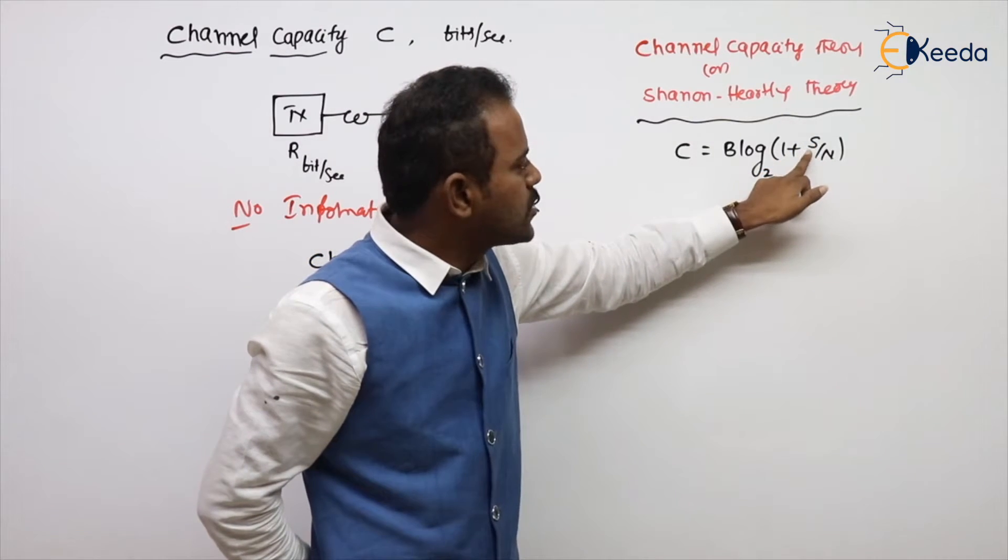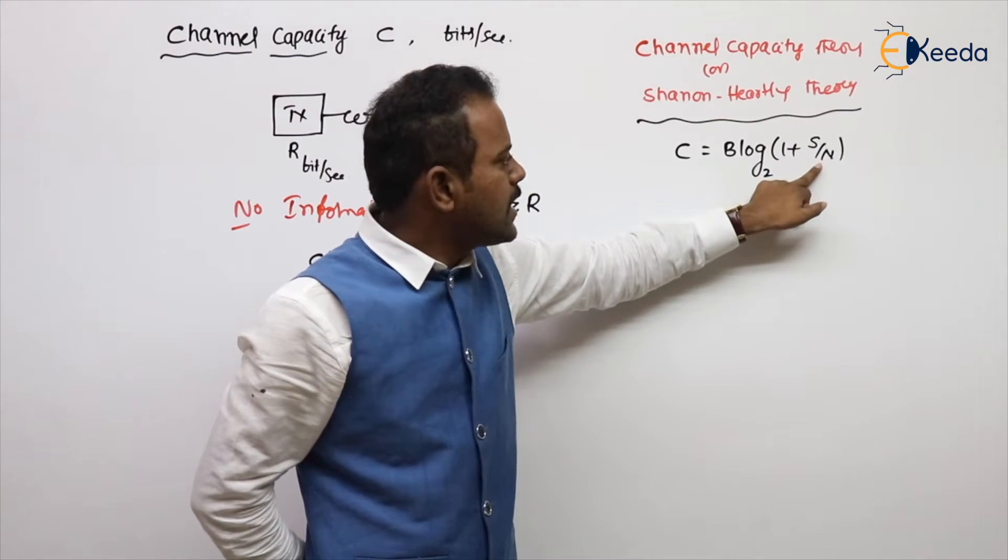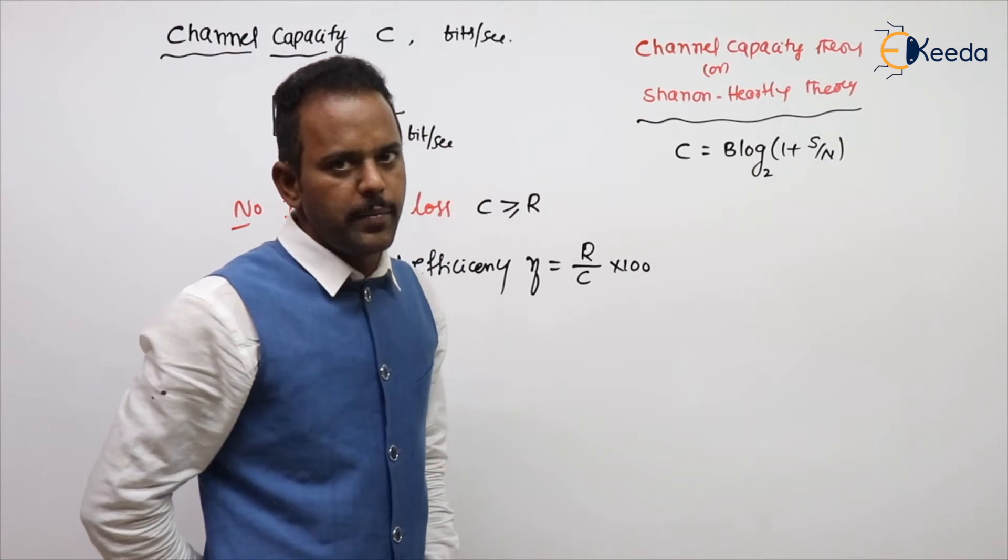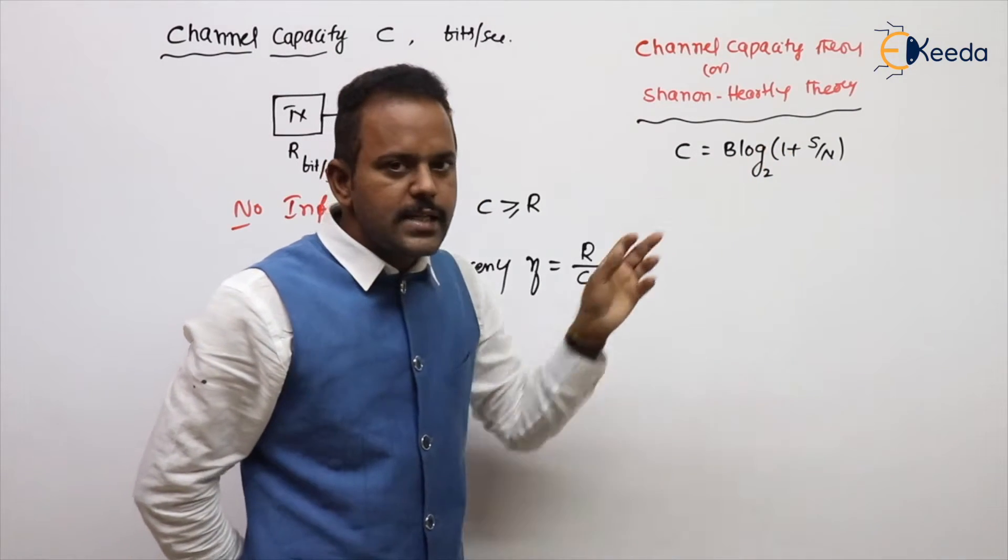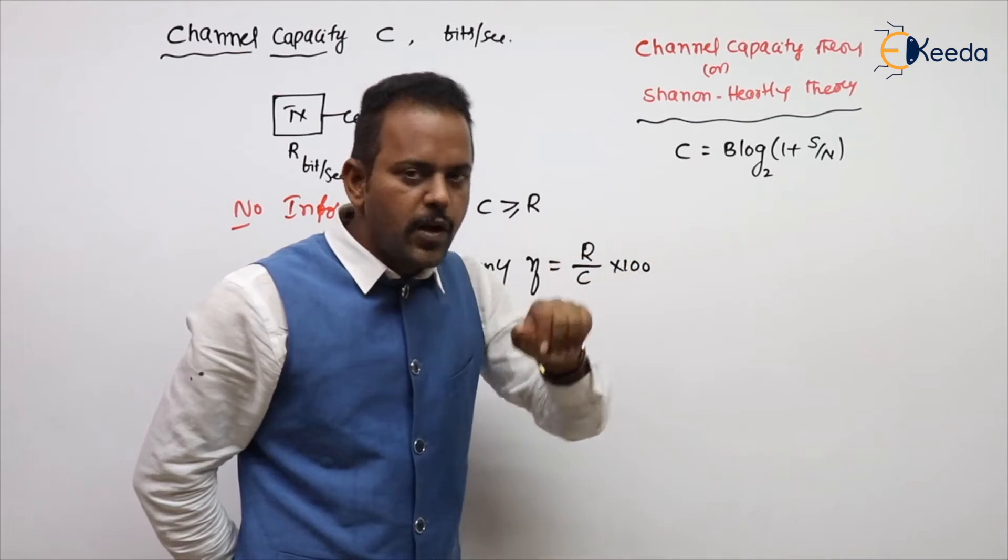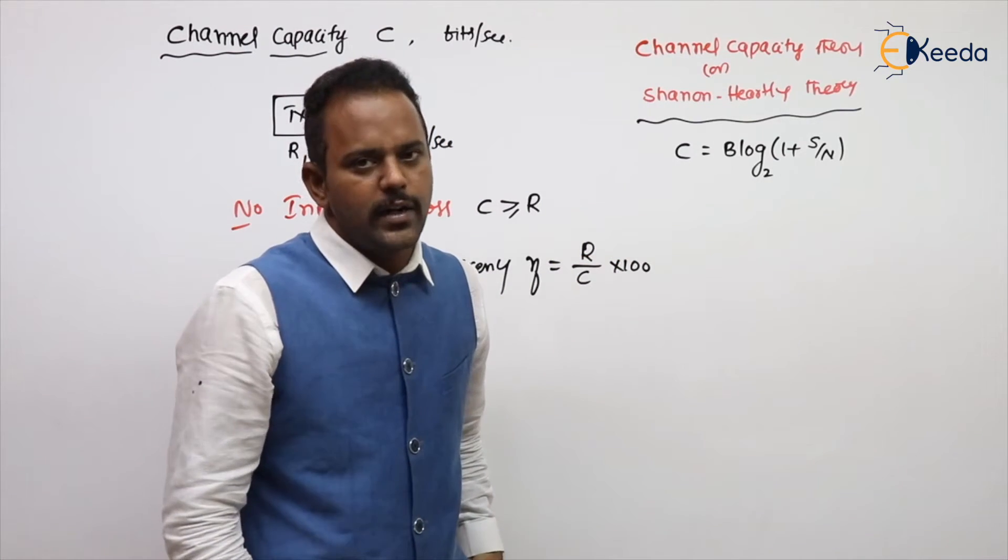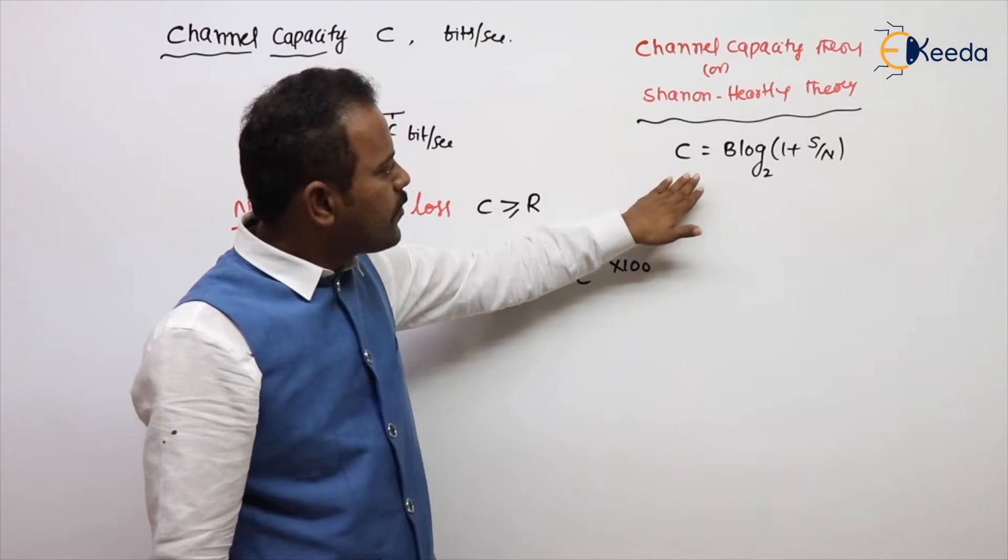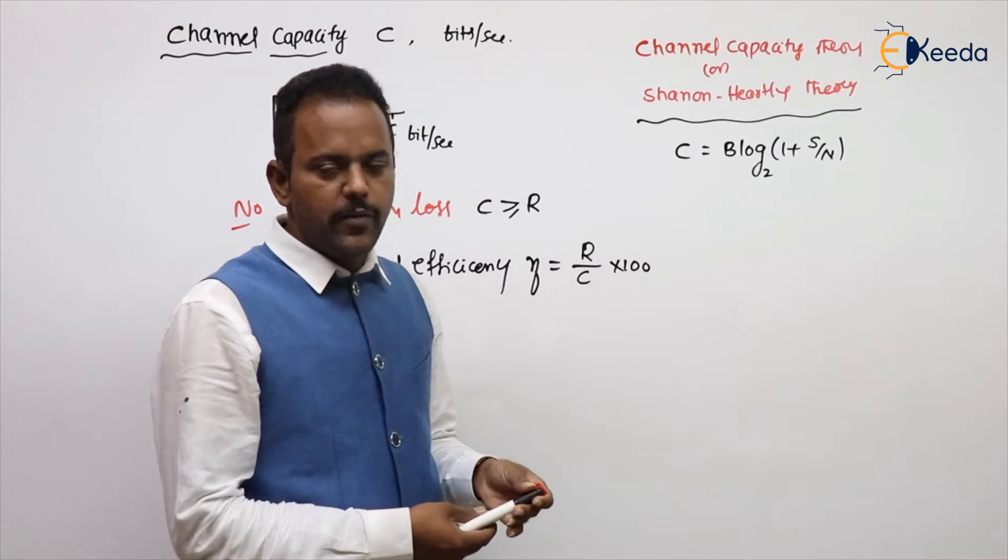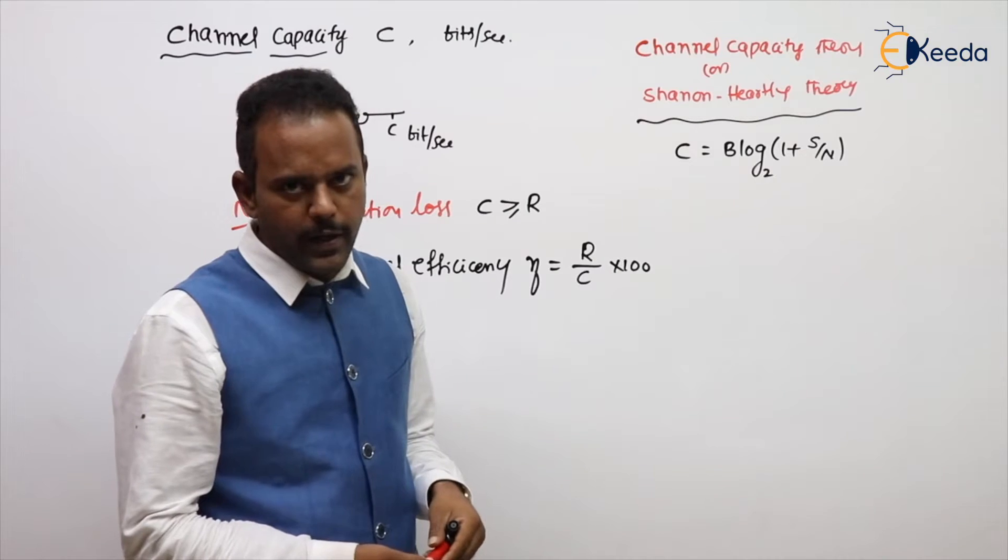S is the signal power expected at output of a channel. N is the white noise power adding in the channel. Both are in terms of watts. This S by N is normal value. So where S is the signal power expected at output of channel, N is noise power adding in the channel, that is additive white noise. This is the formula for channel capacity, very important.